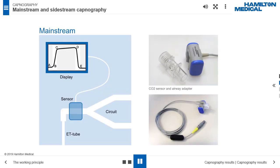Mainstream capnography. With mainstream capnography, the respiratory CO2 is measured directly using a CO2 sensor and airway adapter, or cuvette, at the airway. The measurement is accurate and fast. Mainstream capnography is mainly used in intubated patients, from adults to neonates. The Capnostat 5 is an example of a mainstream capnography device.